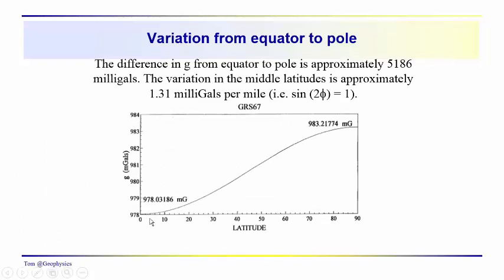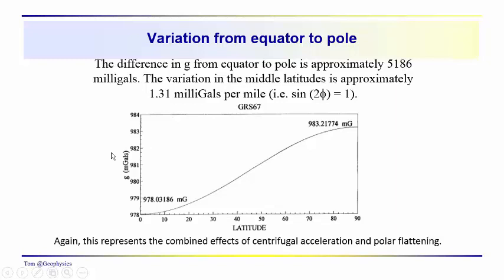So, if we take a look at the variations of the equator as we go from, the variations of g as we go from the equator to the poles. Again, highest acceleration at the equator, 978. Up to the poles, a little over 983. Again, these are in gals, centimeters per second squared. Right in here, I think you can see that the gradient is highest at about 1.31 milligals per mile. Here in the mid-latitudes, 40 to 50. And the total difference is 5,186 milligals. So again, these are just the influences, the combined influence of both the shape of the earth and centrifugal acceleration.